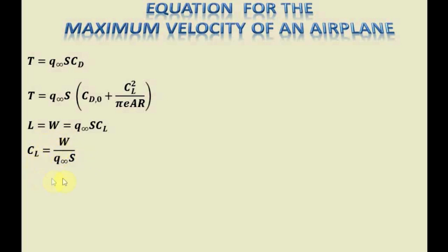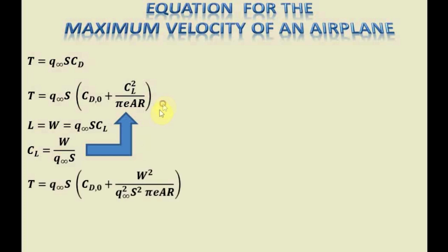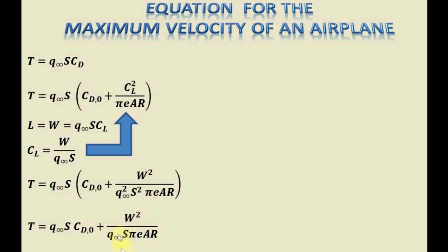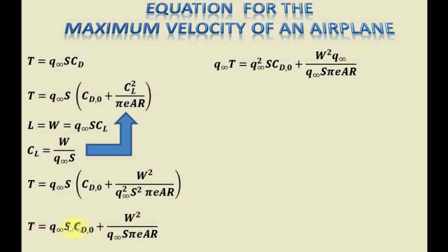We will substitute the value of the coefficient of lift into the thrust equation. When we do that, we get thrust as the expanded equation. Multiplying dynamic pressure times surface area through the first term gives dynamic pressure times surface area times the zero-lift drag coefficient. Multiplying with the second term gives the induced drag term. To make this a quadratic equation in terms of dynamic pressure, we multiply both sides by dynamic pressure, giving dynamic pressure times thrust on the left side, and dynamic pressure squared times surface area times the zero-lift drag coefficient for the first term.